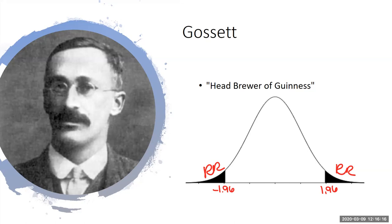While he's sampling the hops to see their quality, if he finds something on the upper tail of the distribution, he would reject the null and say this batch of hops is not normal — there's something wrong with it. Let's just say we're looking at acidity: too high in acidity on one end, too low on the other. If anything was too high or too low, he'd stop production and figure out why the crops were bad.